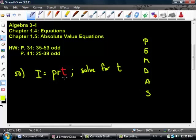In this problem here, I equals PR times T, is there any subtraction happening? No. Is there any addition happening? No. Is there any division happening? No, there's not, right? There's no division going on. Now, is there any multiplication happening? Yes. That's what's happening.